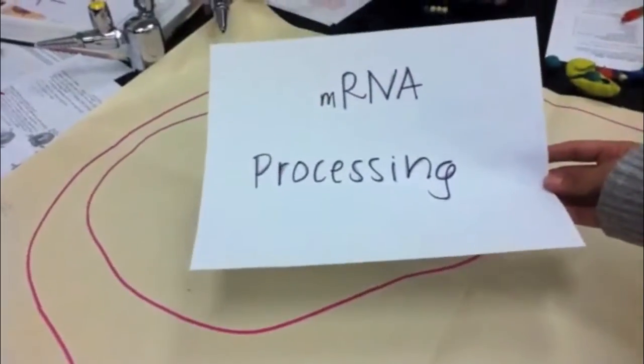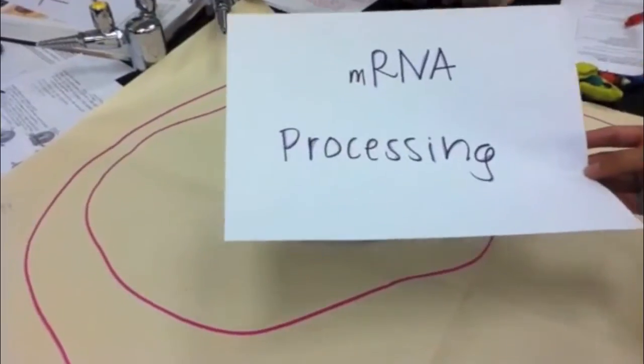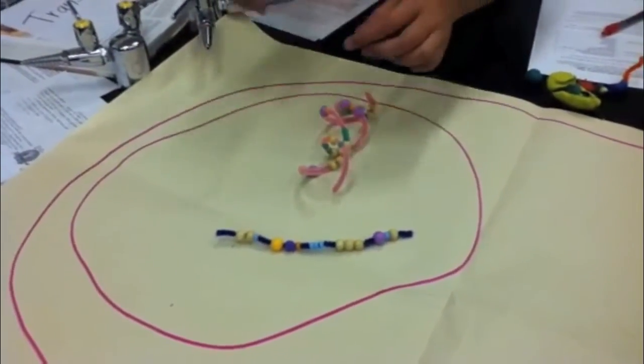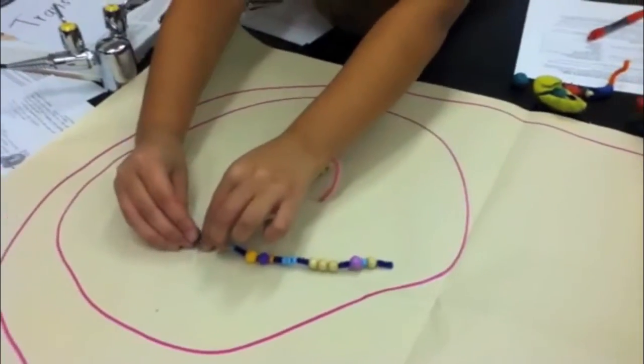During mRNA processing, which occurs after transcription, eukaryotic cells modify RNA. Modified guanine are added to the 5' end of mRNA, forming a 5' cap.